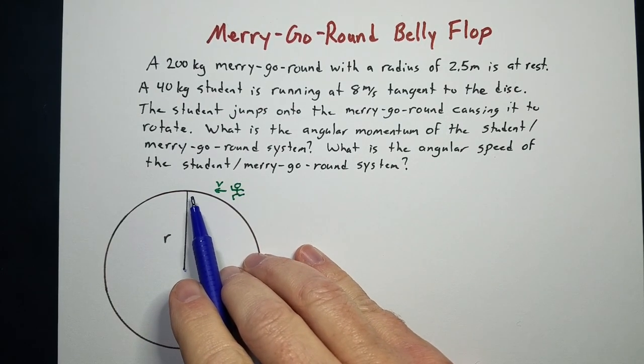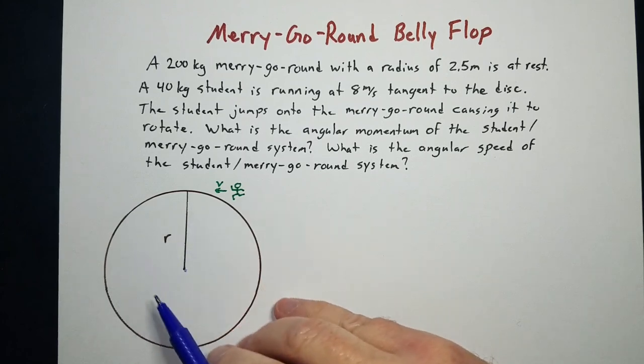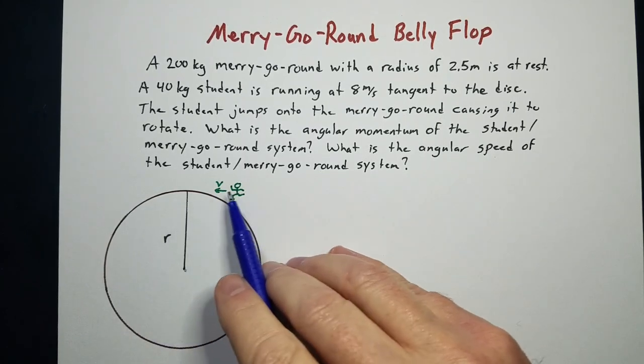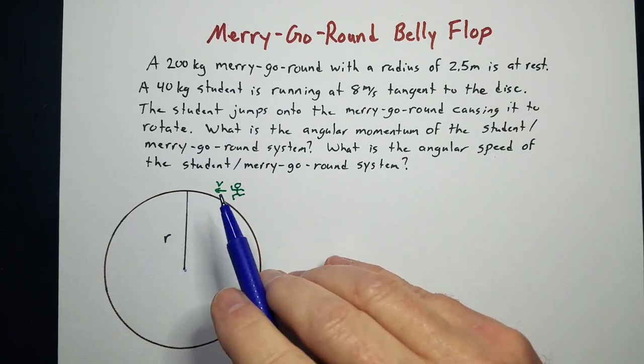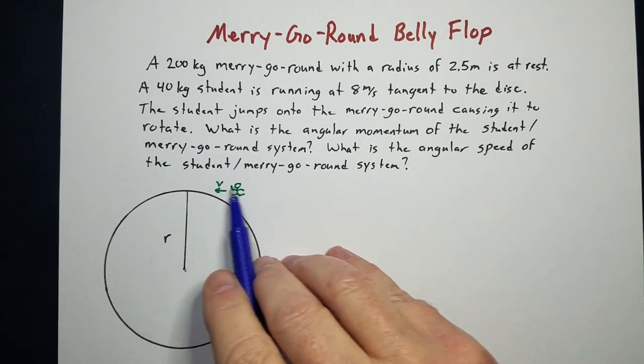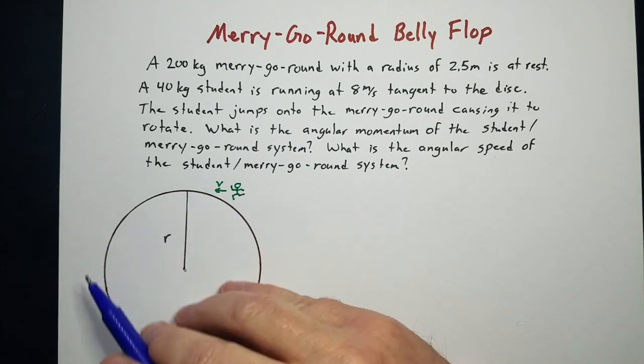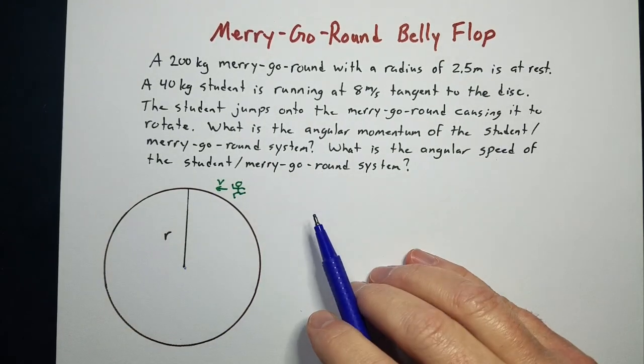We want to know the angular momentum of the merry-go-round student system after they jump on it, and the angular velocity after they jump on it. Here's a problem where we've got something running linearly, jumping on something to make it spin, and we've got to figure out what's going on.